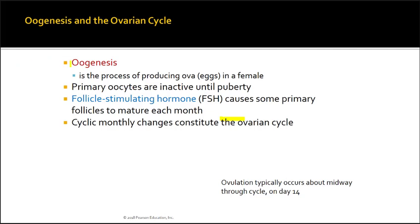Spermatogenesis was the formation of sperm; oogenesis is the formation of an egg, also called an ovum. Primary oocytes are inactive until puberty — before puberty, a girl has primary oocytes in her ovaries, but they are inactive. Follicle-stimulating hormone causes some of these primary follicles to mature every month, though not all will mature.